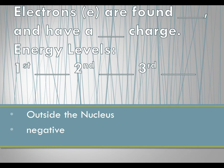Electrons are found in energy levels. In that first energy level you can have two electrons. In that second energy level you can have eight electrons. And in that third energy level you can have eight electrons. We do go beyond that but in this class we'll stick to those three energy levels.